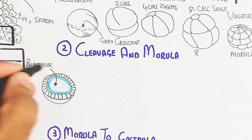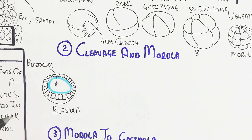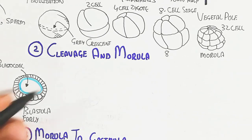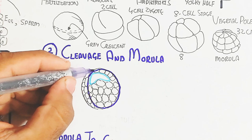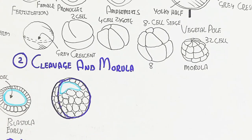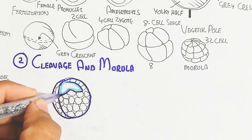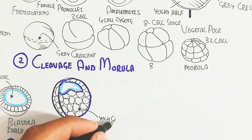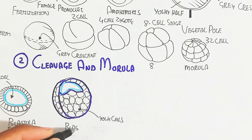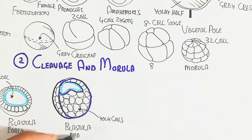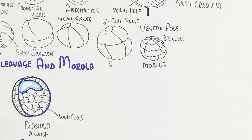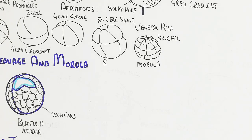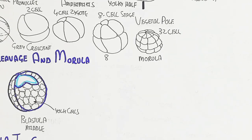In the early stage, the blastula arises with the blastocoel cavity within it. In the middle stage, yolk cells develop. The blastocoel can be seen in the diagram. After this formation, the ectoderm, mesoderm, and endoderm begin to form in the early stages of gastrulation.